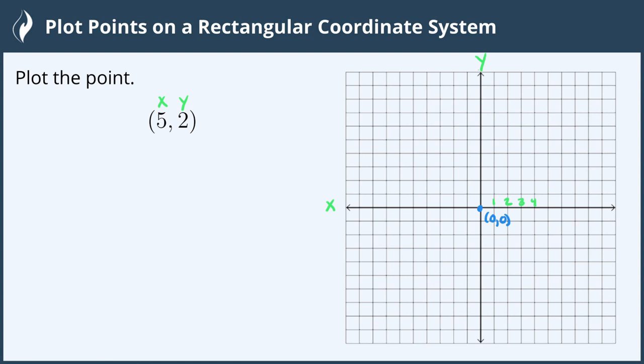To the left of the origin the x-axis is negative. So negative 1, negative 2, negative 3, negative 4 and so on.